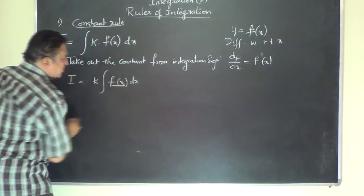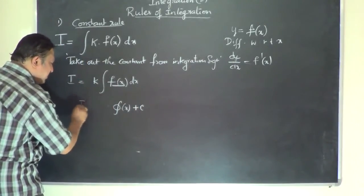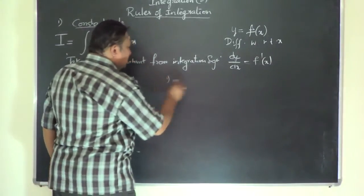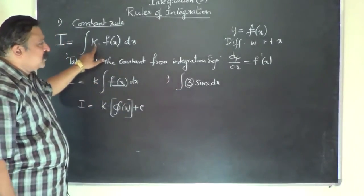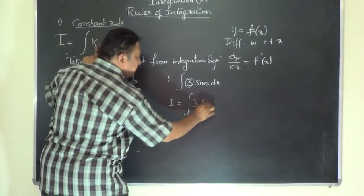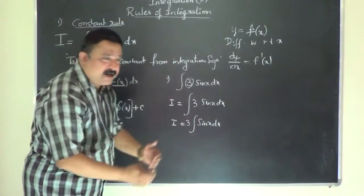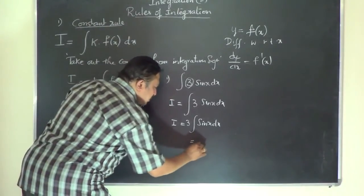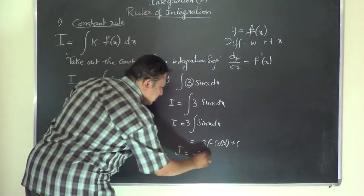Suppose that by integrating f(x) we get φ(x) with the constant of integration c. Then I = k·φ(x) + c. For example, consider the integration of 3 sin x dx. Here 3 is the constant k. By the constant rule, take 3 outside the integration sign, leaving integral of sin x dx. Since the integral of sin x is −cos x, the answer is 3·(−cos x) + c, which simplifies to −3 cos x + c.